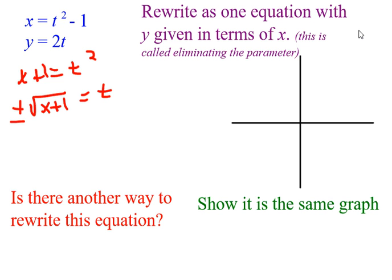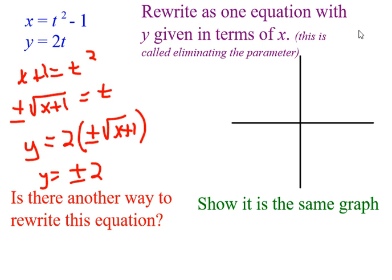And then what I do is I rewrite this y equals 2 times plus or minus root x plus 1, which could also be the same as plus and minus 2 root x plus 1. And if we think about what that looks like, we have really two equations.